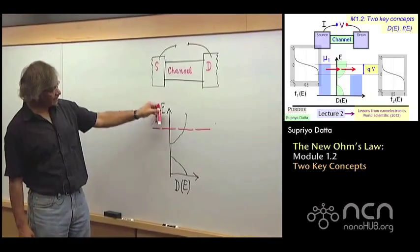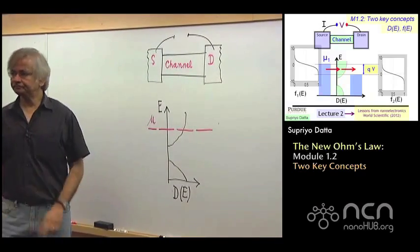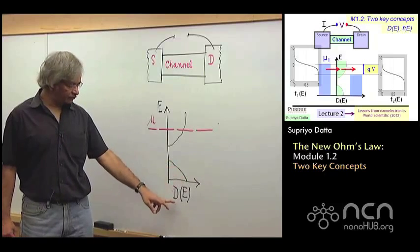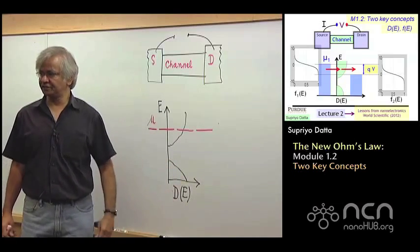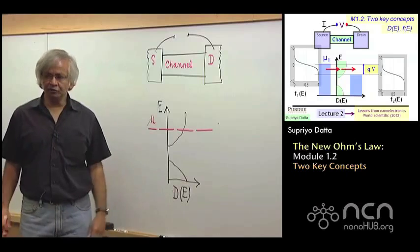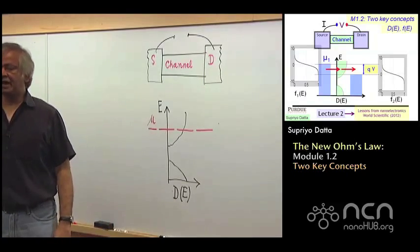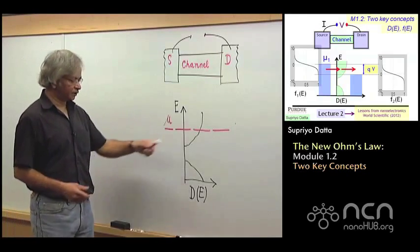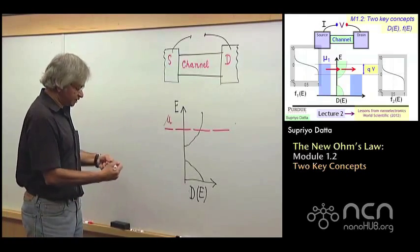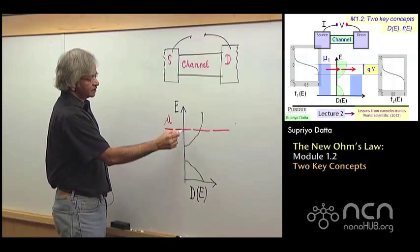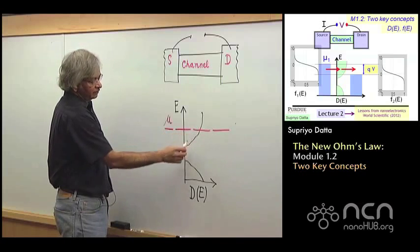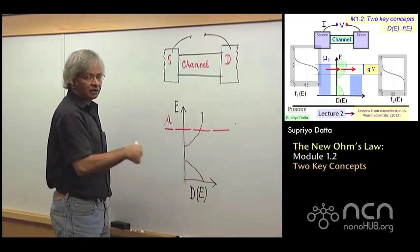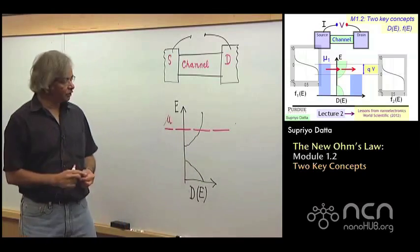Along the vertical axis is energy. Along the horizontal axis, I have this what's called the density of states, which tells you how many states you have per unit energy at that particular energy. So let's say you're interested in some energy here. Then this density of states value here tells you how many states per unit energy.